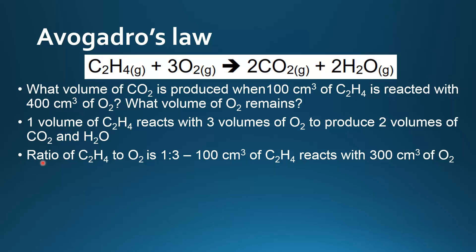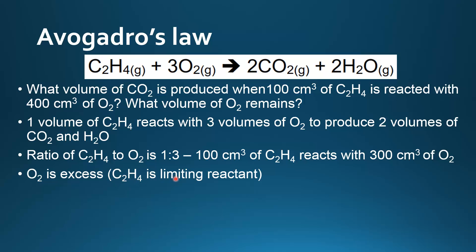We look at the ratio of ethene to oxygen, and from the balanced equation it's a one to three ratio. So 100 centimetres cubed of ethene reacts with 300 centimetres cubed of oxygen. Because we start with 400 centimetres cubed of oxygen and only need 300 centimetres cubed to react completely with the ethene, the oxygen is in excess, and ethene is the limiting reactant.